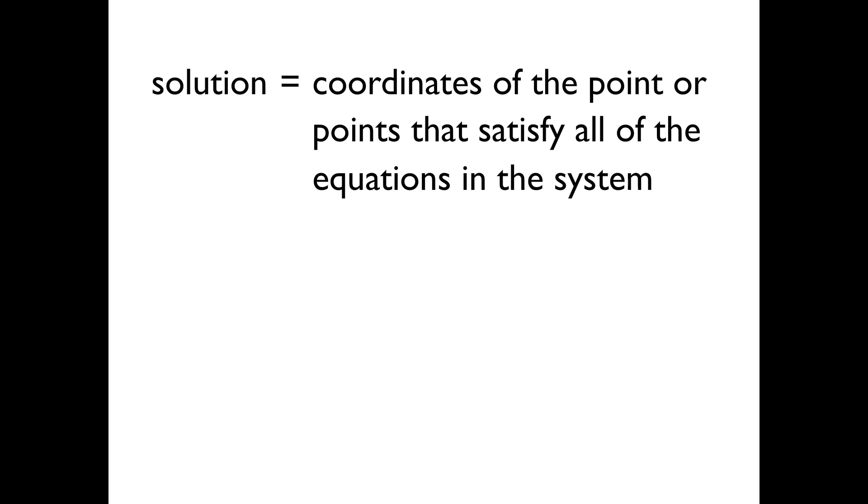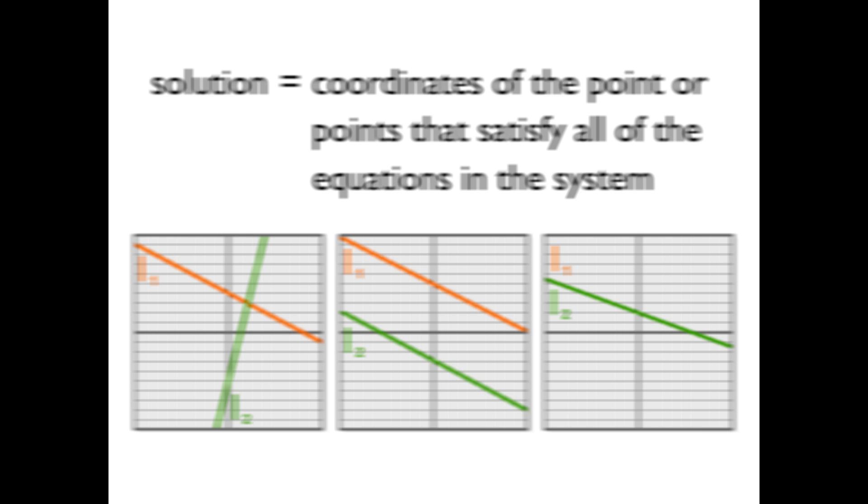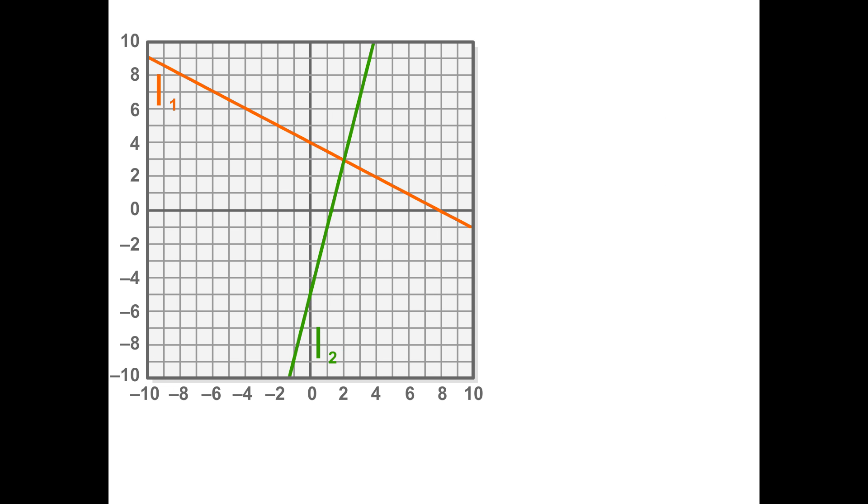For a system of two linear equations, there are exactly three types of solutions. Here are two lines that intersect at exactly one point.